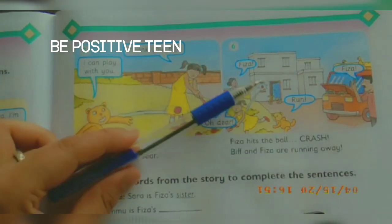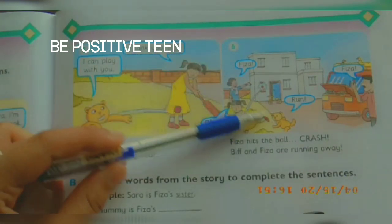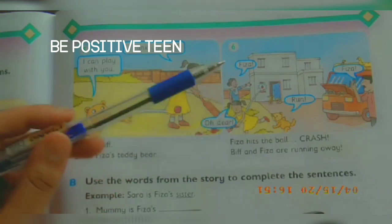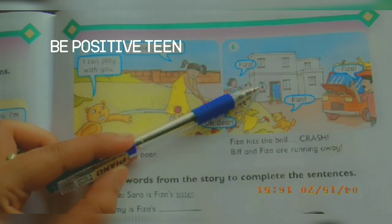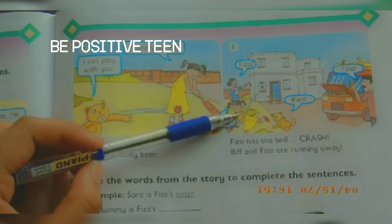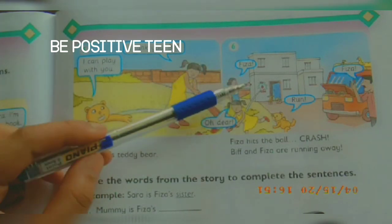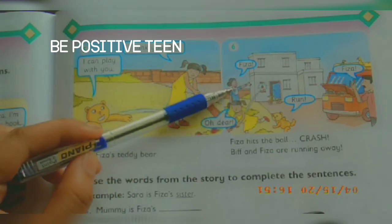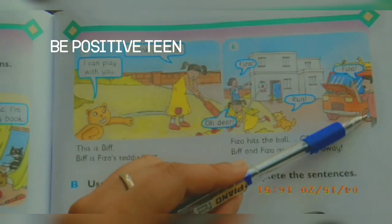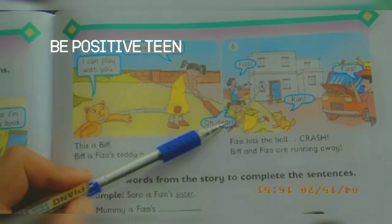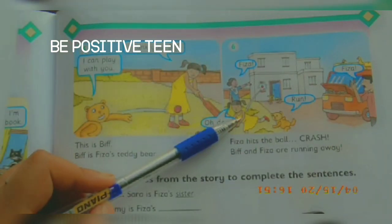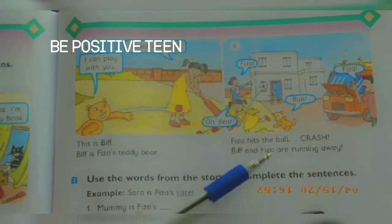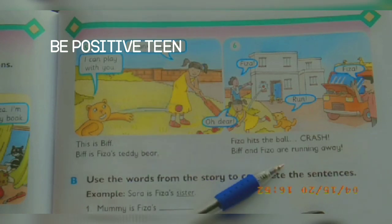In the sixth picture, something has gone wrong. Fizza hit the ball and crashed a window — she broke the window and now both of them are running. Her mother shouts: Fizza! Her father shouts: Fizza! Fizza says: Oh dear! And Biff says: Fizza hits the ball — crash! Biff and Fizza are running away.